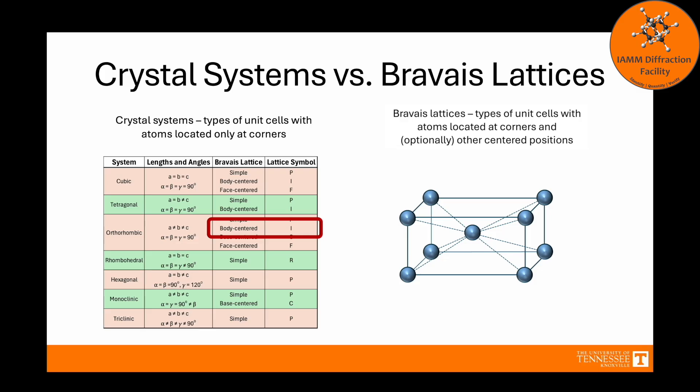Body-centered has the lattice symbol I. As the name implies, there is an atom sitting in the center of the unit cell. Base-centered has the lattice symbol C. This means that there are two opposing faces that have an atom centered in each face. Here, we have an atom centered in the top face and the bottom face. Just to be clear, it does not have to be in these two faces. You could have atoms here or here. As long as it is only two opposing faces and no others, that is base-centered. As a bit more clarification, while only C is listed as the lattice symbol, it can really be A, B, or C. The lattice symbol C specifically applies when the atom is in the center of the face formed by the A and B edges.